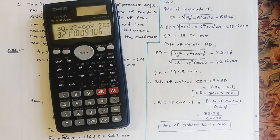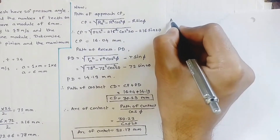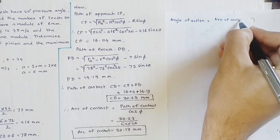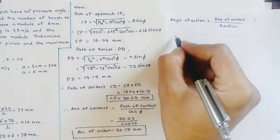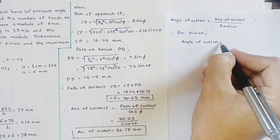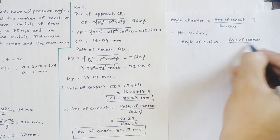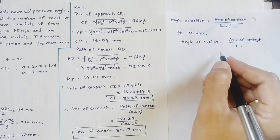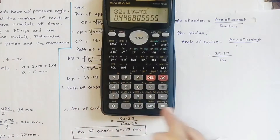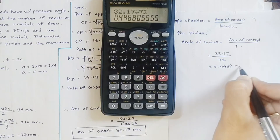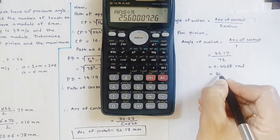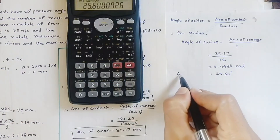Next, we find the angle of action. The formula is arc of contact divided by the pitch circle radius. For the pinion, the angle of action = 32.17 / 72 = 0.4468 radians, which converts to 25.60 degrees.